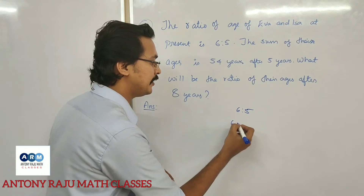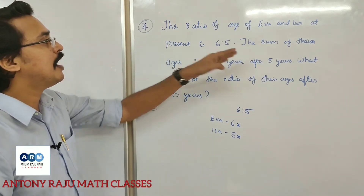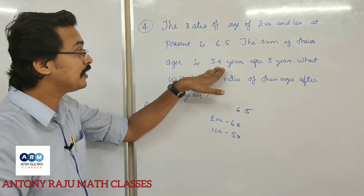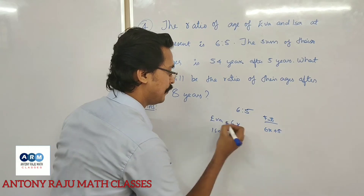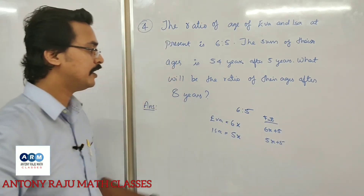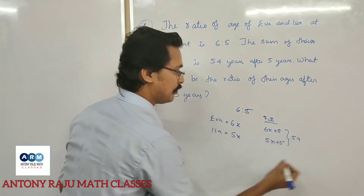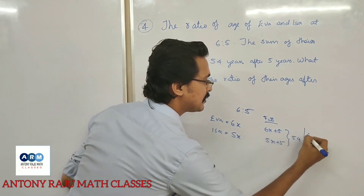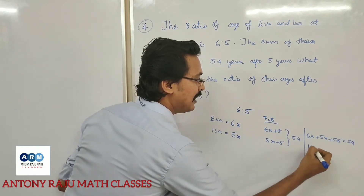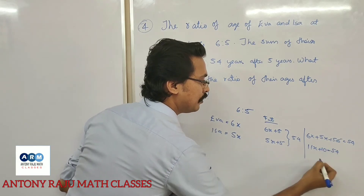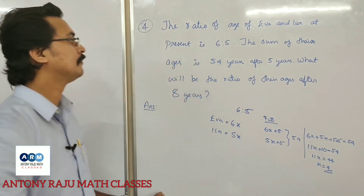Let Iba's present age be 6x and Isa's present age be 5x. The sum of their ages is 54 years. So 6x plus 5x equals 54, which gives 11x equals 54. Wait — for the future condition after 8 years: 6x plus 8 plus 5x plus 8 equals 54 means 11x plus 10 equals 54, so 11x equals 44, x equals 4.